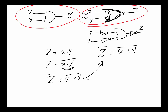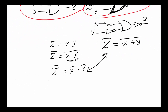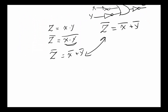We can generalize this across the popular gates: NAND gate, NOR gate, AND gate, and OR gate. For an AND gate, all the non-complemented inputs become complemented, the complemented output becomes uncompleted, and then you replace AND with OR. Those two rules let you go back and forth between AND and OR forms.